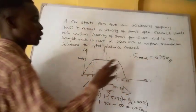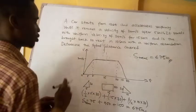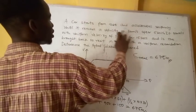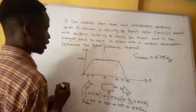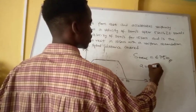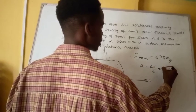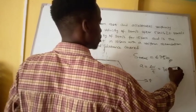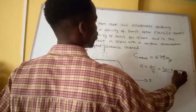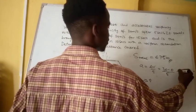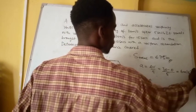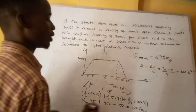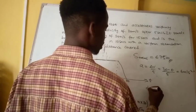Now, what if they ask us to find the acceleration of the car? Notice the car only accelerated from start until it reached 30 meters per second. Acceleration equals change in velocity over time: final velocity is 30 m/s, initial velocity is zero (started from rest), over 5 seconds. So acceleration = 30 / 5 = 6 meters per second squared.